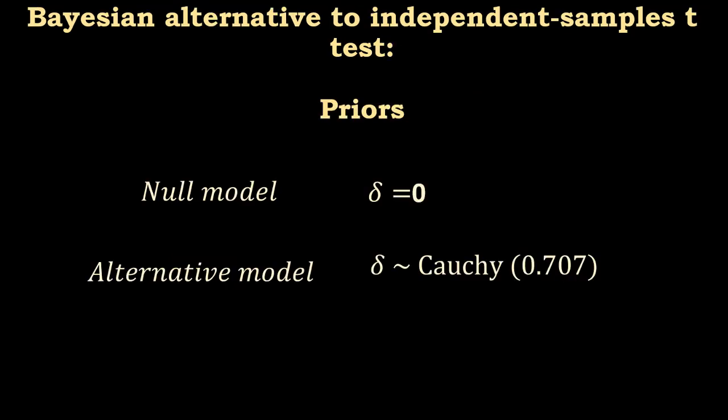Let's go to the priors. For the null model, we say delta equals zero, or we've got a spike in zero, meaning that no other value has any credence. And for the alternative model, it's the same as in the previous analysis. For delta possible values, we assign a Cauchy distribution with parameter 0.707.